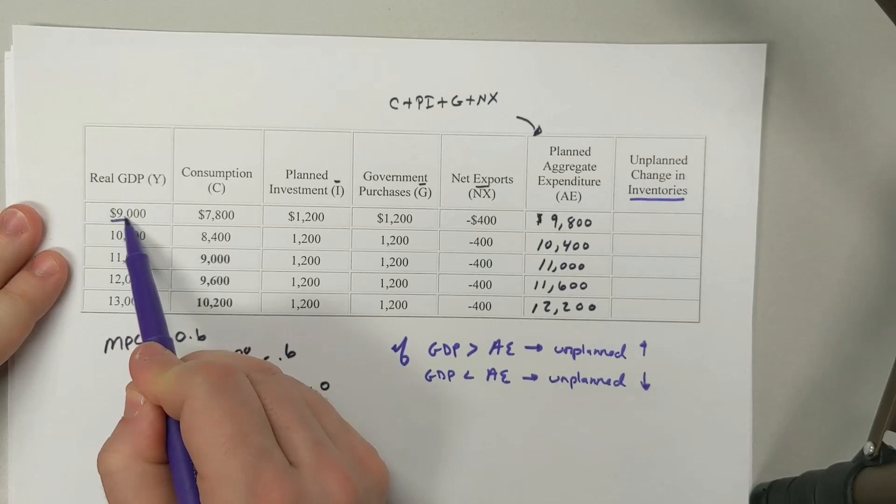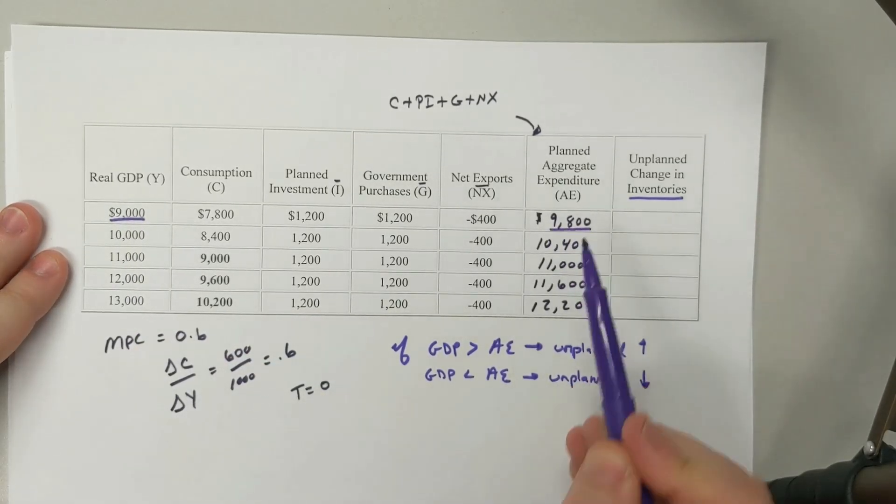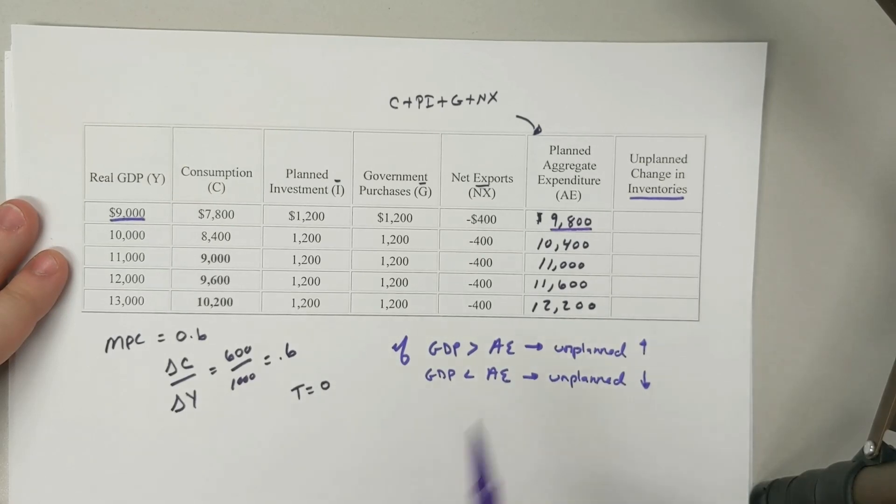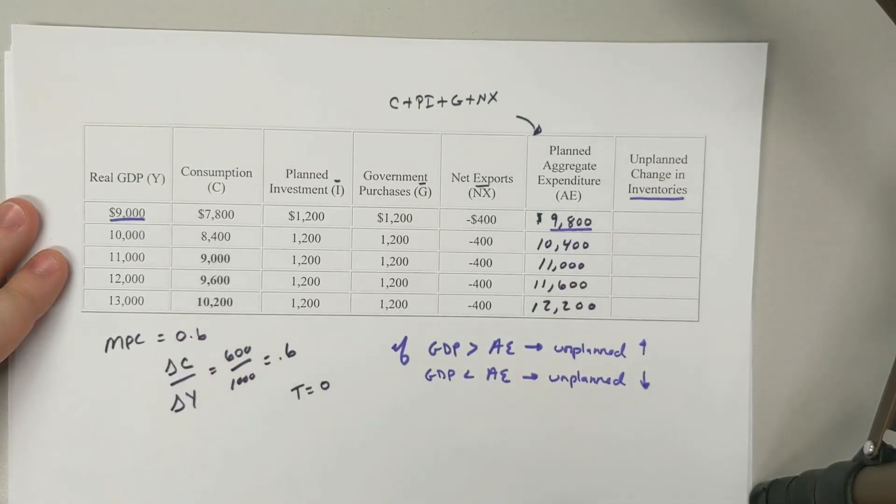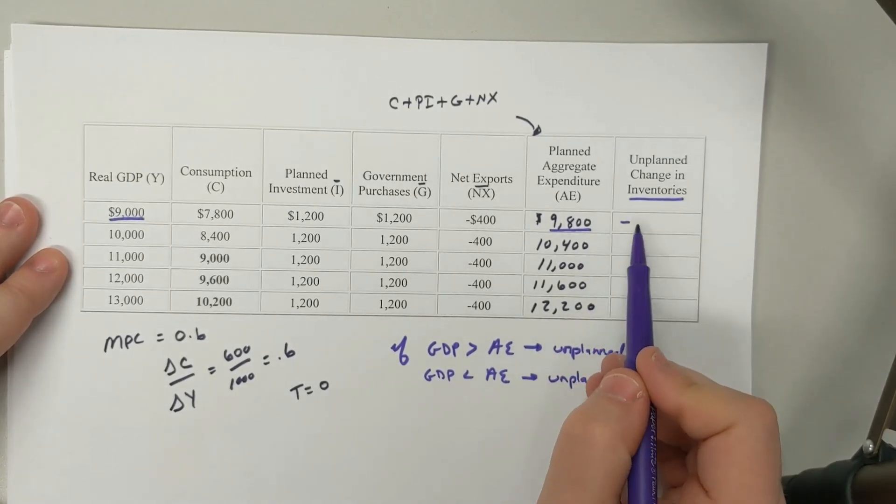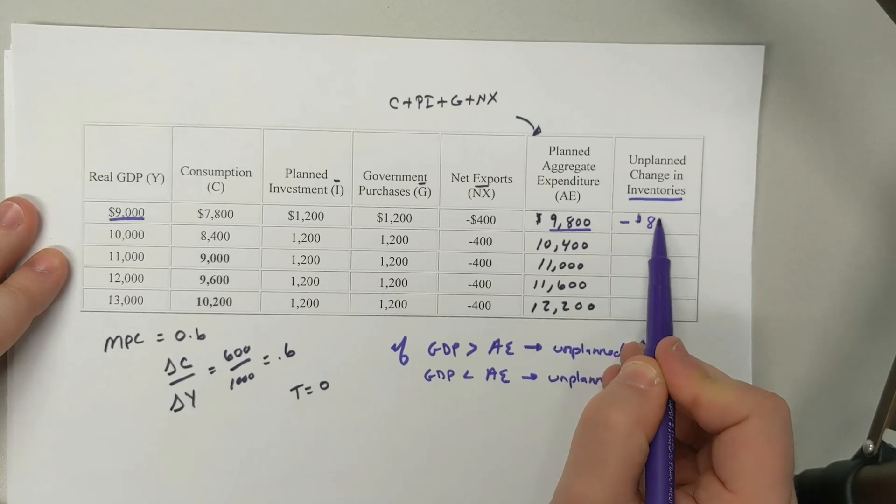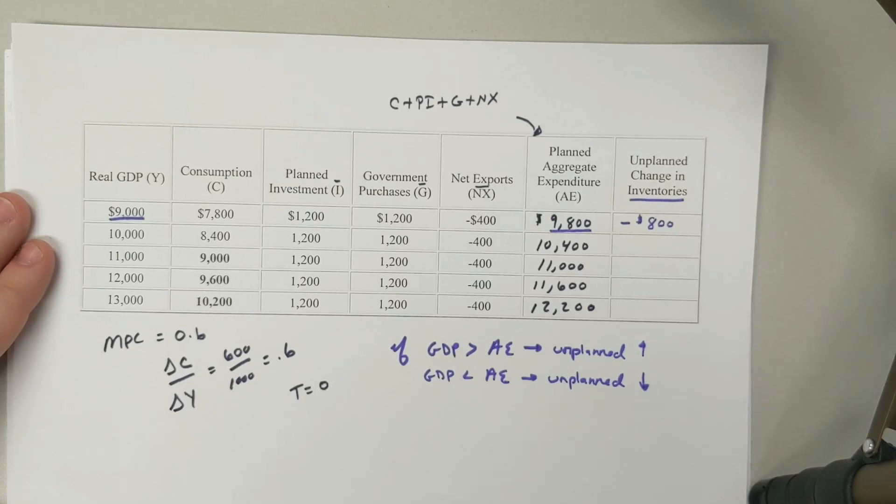Look here, I have GDP of 9,000 and I have spending of 9,800. That means that $9,800 came out and only 9,000 went in. So that tells me that I had a negative or a decrease of $800. I had a negative $800 unplanned change in inventories.